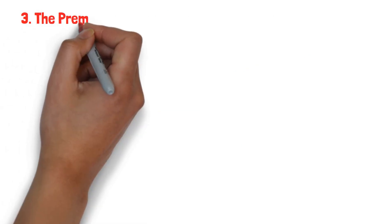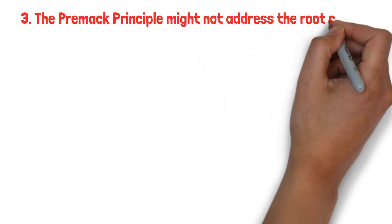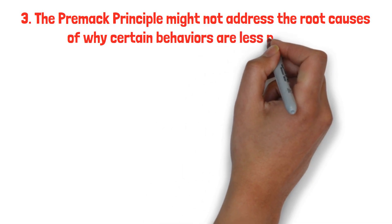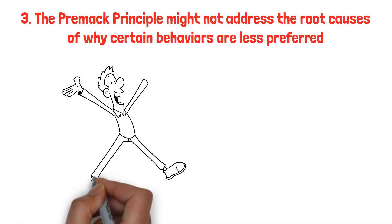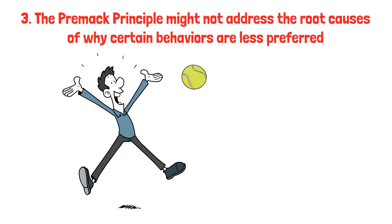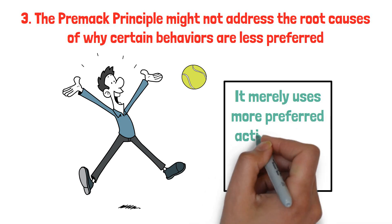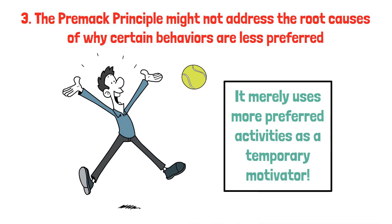Thirdly, the Premack principle might not address the root causes of why certain behaviors are less preferred. Instead of fostering genuine interest or enjoyment in less preferred activities, it merely uses more preferred activities as a temporary motivator.